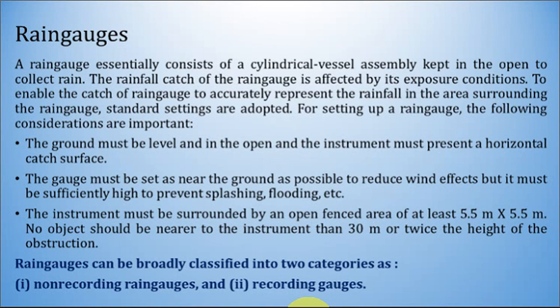For setting up a rain gauge, the following considerations are important. The ground must be level and in the open, and the instrument must present a horizontal catch surface. The gauge must be set as near the ground as possible to reduce wind effects, but sufficiently high to prevent splashing and flooding. The instrument must be surrounded by an open fenced area of at least 5.5 meter by 5.5 meter, and no object should be nearer to the instrument than 30 meters or twice the height of obstruction.